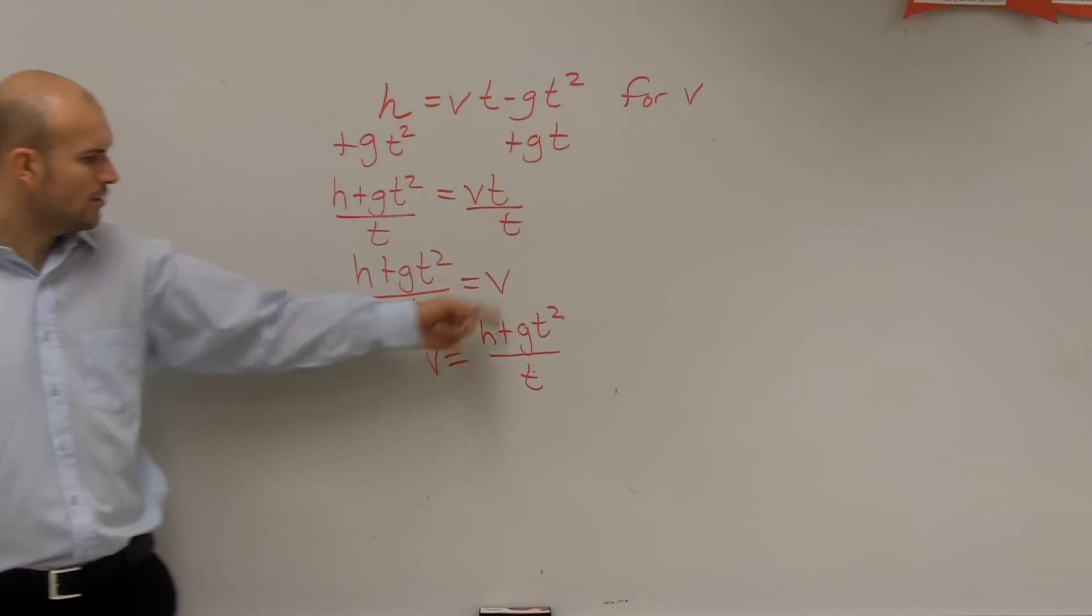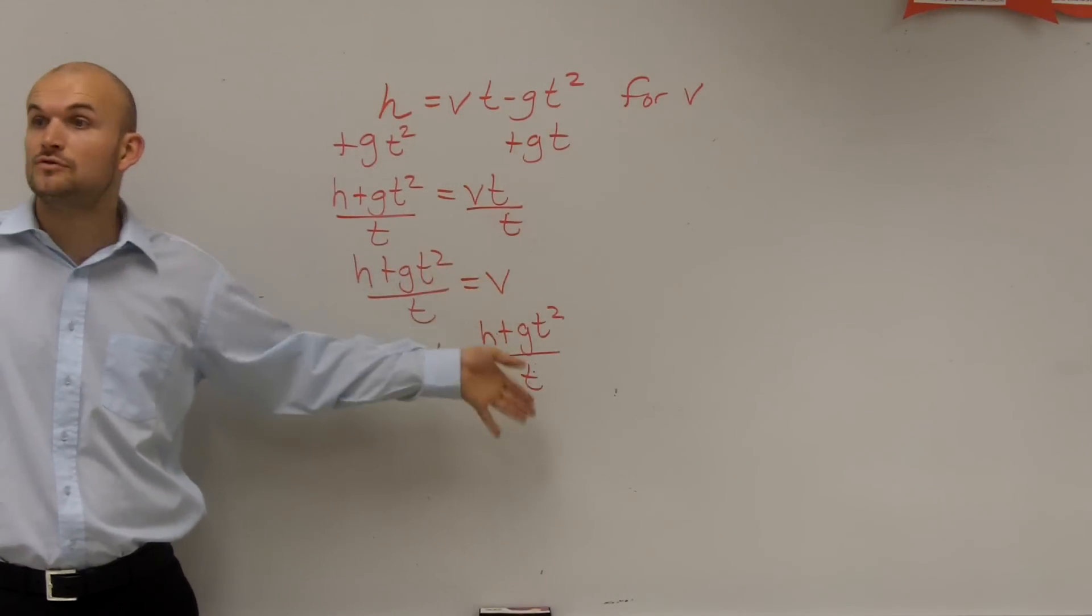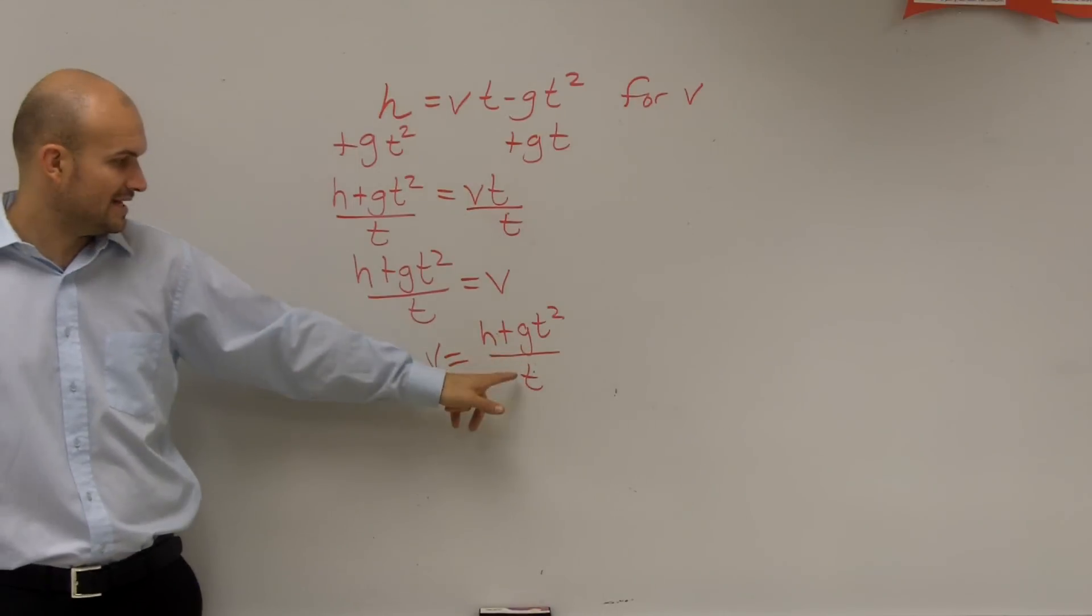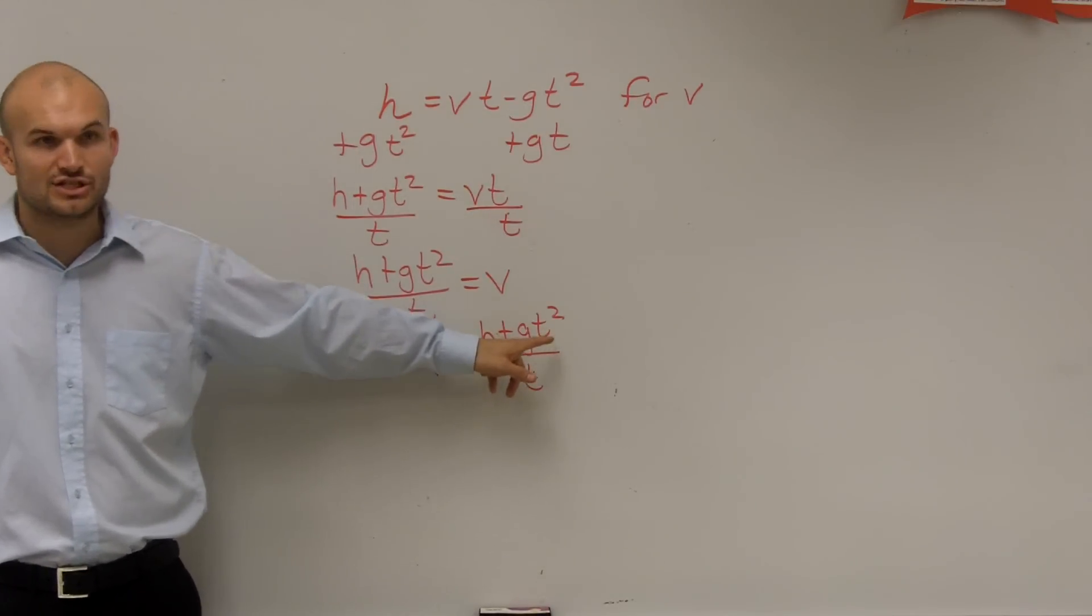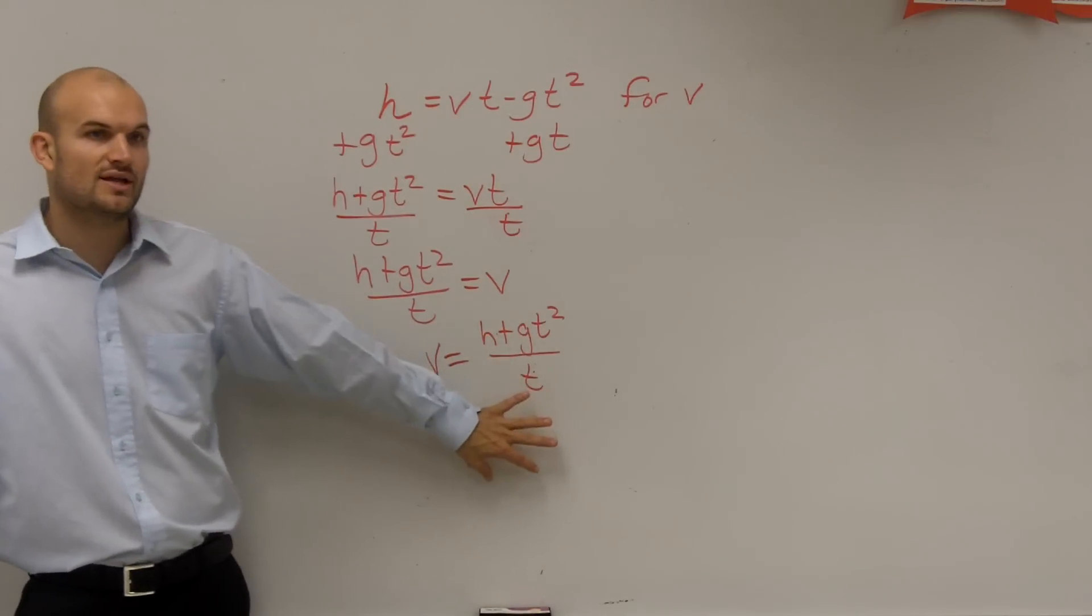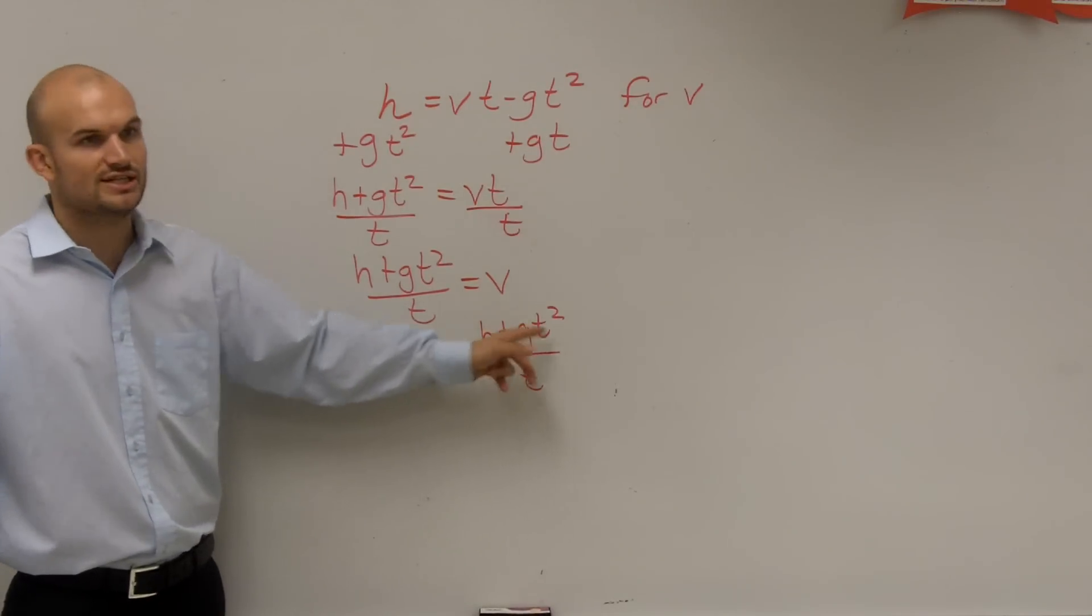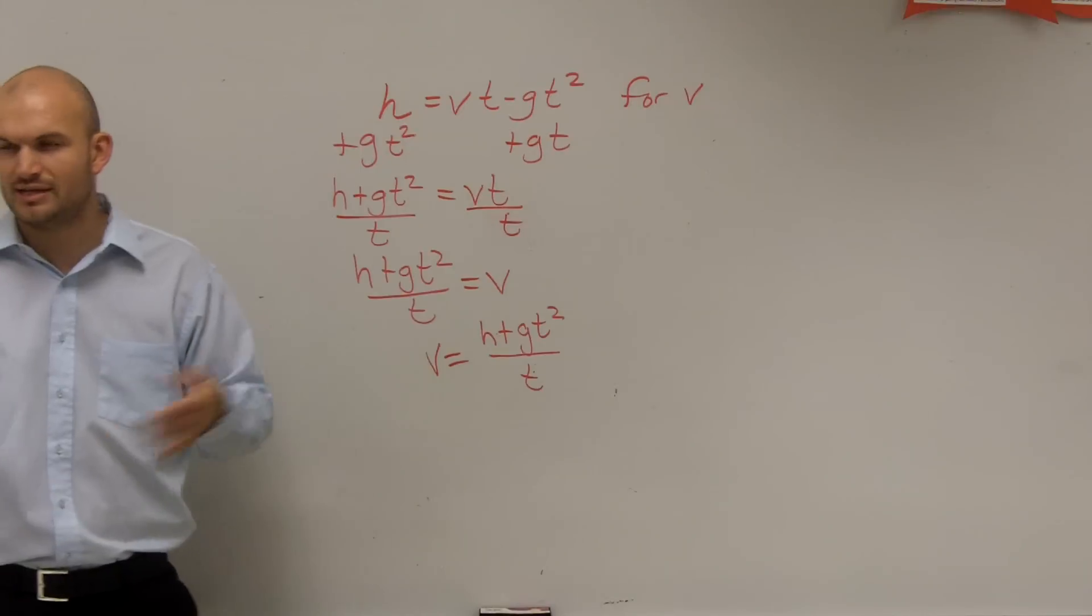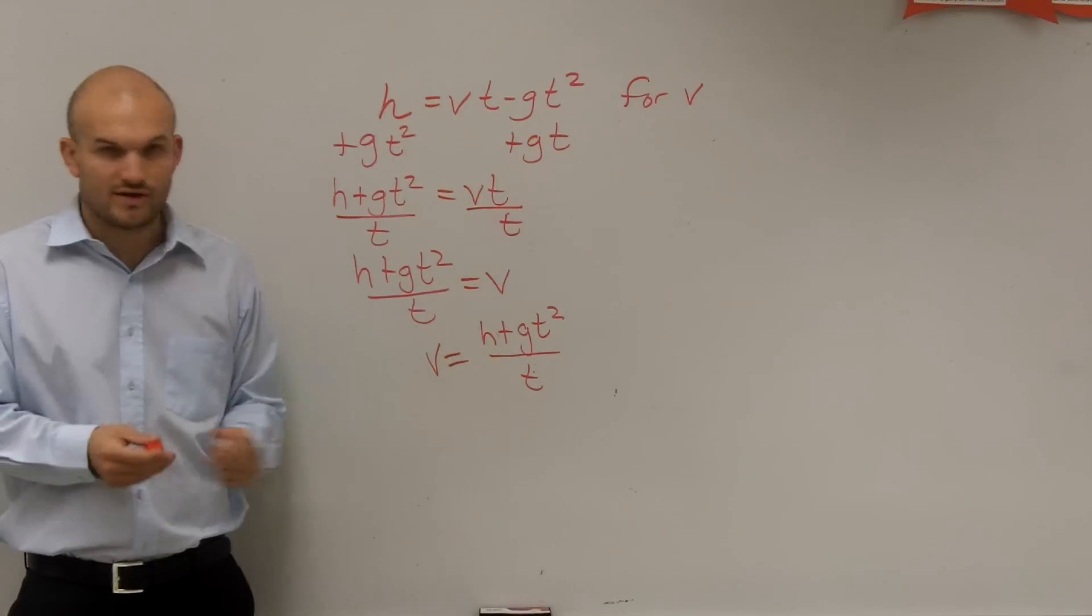Now some of you might be asking, well, can't you cancel off the t's? Yes, you can if you separate the fraction, meaning that t divides into h and it divides into the g t squared. So I would just leave it like this. If you wanted to separate it, though, you'd have to do h divided by t plus g t squared divided by t. And then you can cancel out if you needed to, but it doesn't matter. So you can have a t on the bottom of each.